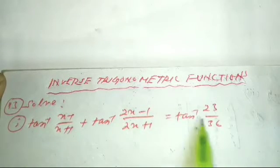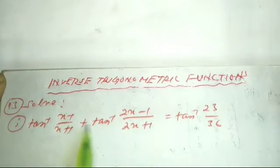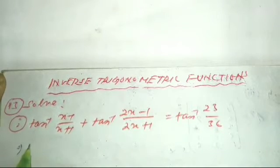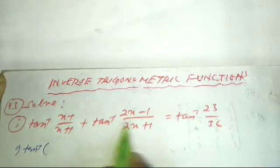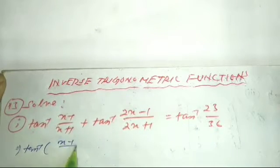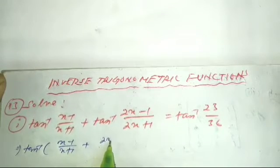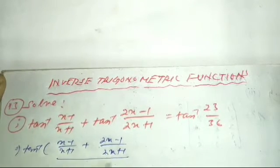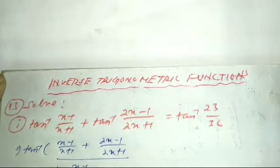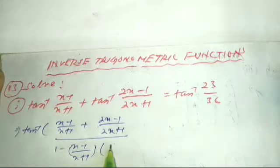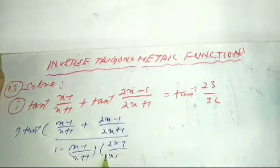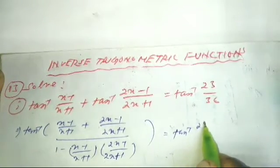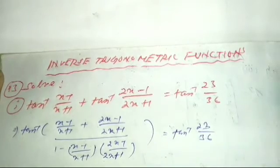So this is our question. We will apply the tan inverse addition formula. That is: tan inverse of (x-1)/(x+1) plus (2x-1)/(2x+1), all divided by 1 minus (x-1)/(x+1) into (2x-1)/(2x+1), equals tan inverse of 23/36.